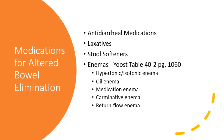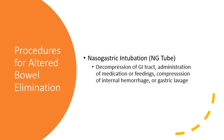A nasogastric (NG) tube can be inserted for GI decompression, medication or feeding administration to bypass upper GI issues, or compression of internal hemorrhage with suction to remove blood from the stomach. Gastric lavage can also be performed to wash out stomach contents.